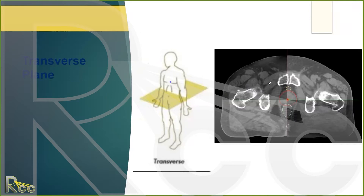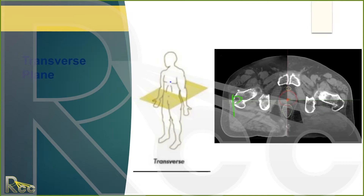The transverse view is as if you sliced the patient in half — like a loaf of bread. From an imaging perspective, you're always looking from the feet towards the head. Left side is on the right, right side is on the left. For this patient we're looking at the pelvis again — rectum, prostate, a bit of the bladder, pubic symphysis, and the gluteal muscles.